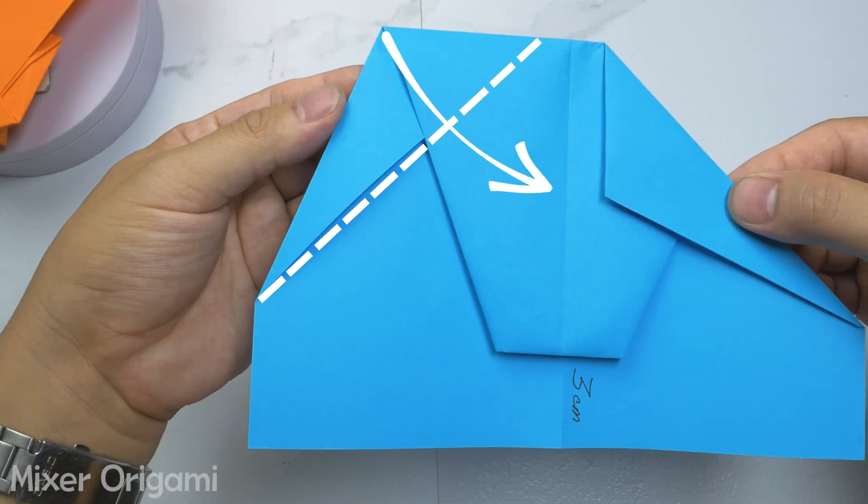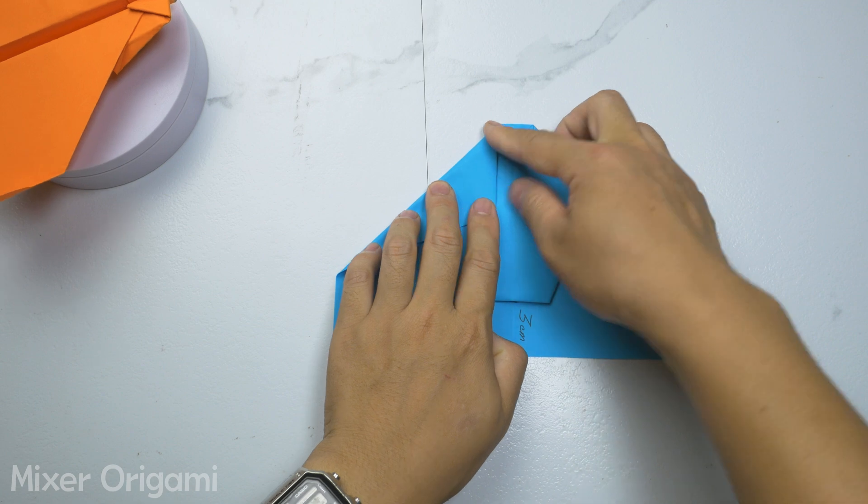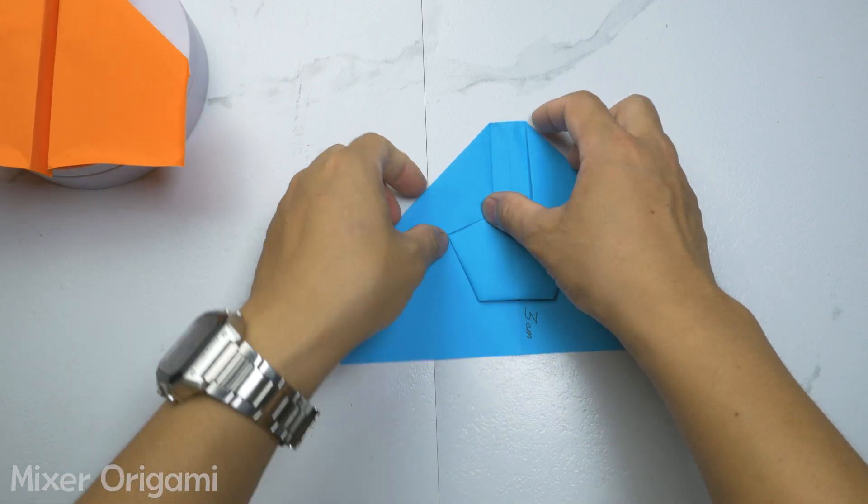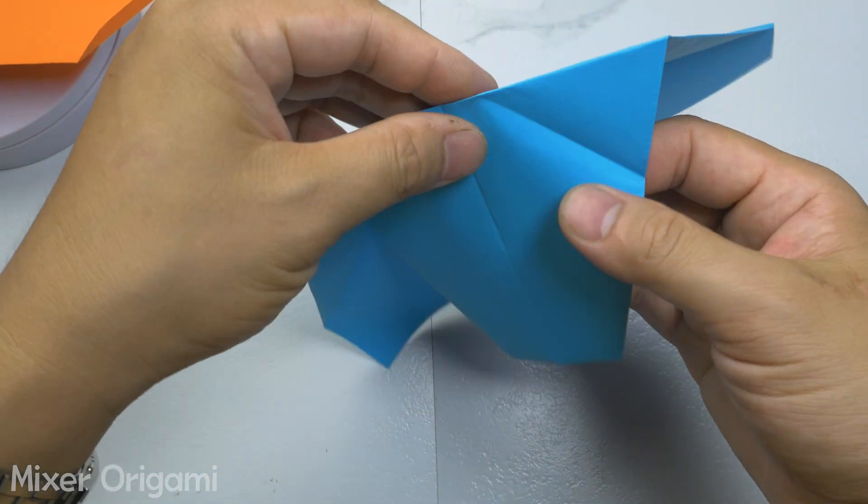Step 8. Do the same with the left wing of the airplane. Be careful to fold both sides symmetrically for the paper airplane to work best. Next, open the part you just folded and fold it back inside. Do the same for both sides.